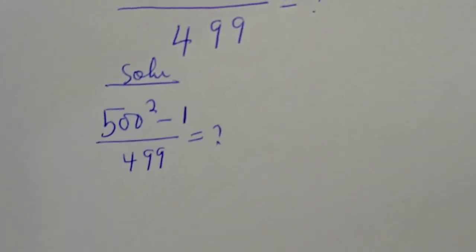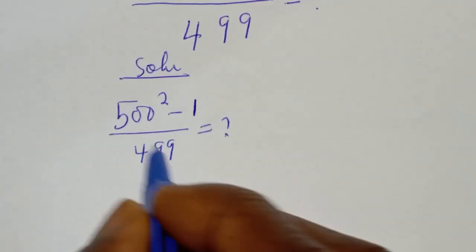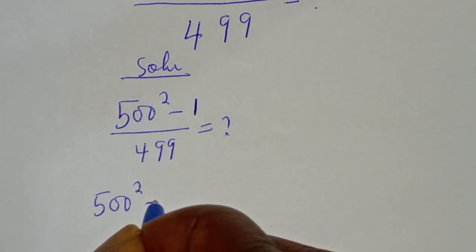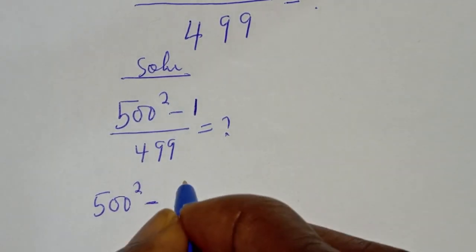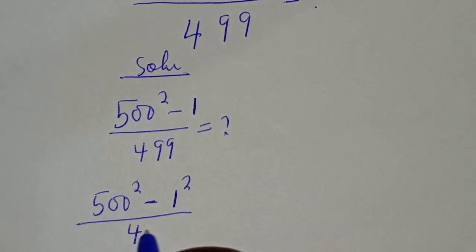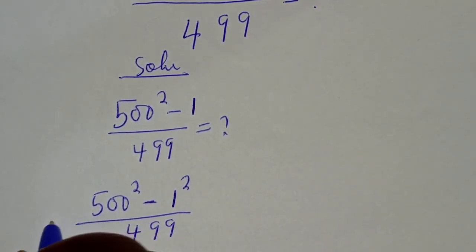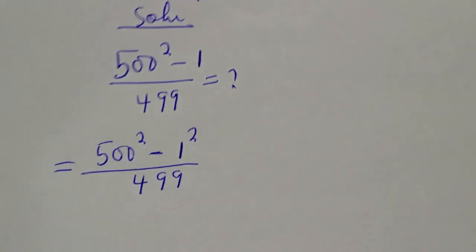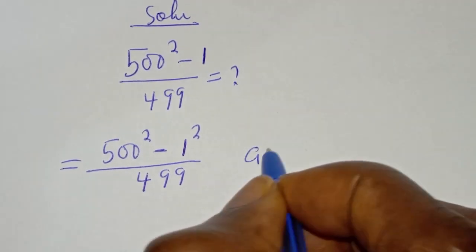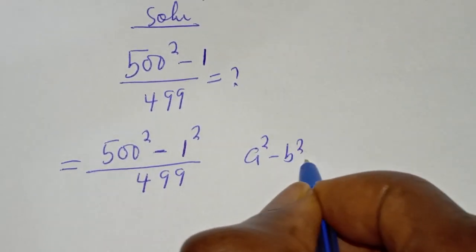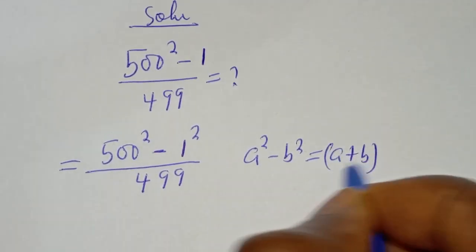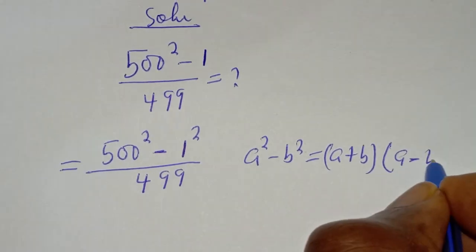So, this is the same thing as 500 squared minus 1 squared divided by 499. Now, this is in the form of a perfect square difference. That is, if you have A squared minus B squared, it is equal to A plus B multiplied by A minus B.